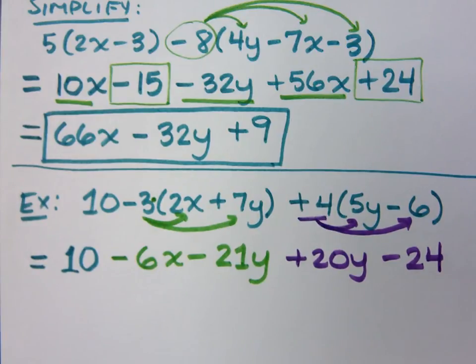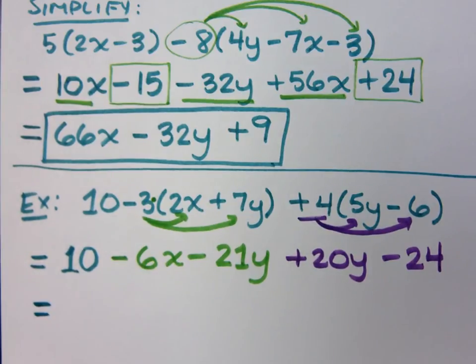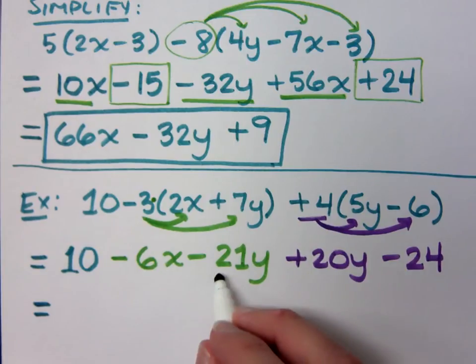These are like terms. Combine what we can. What gets to combine here? 10 minus 24. That's going to be at the end because it's constant. The y's. We can combine the y's. So how much y do we have?